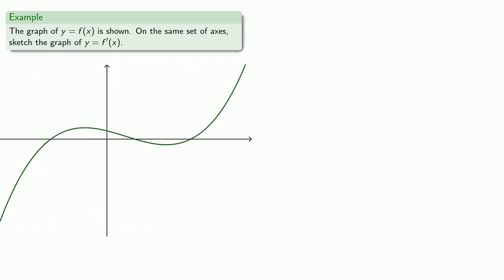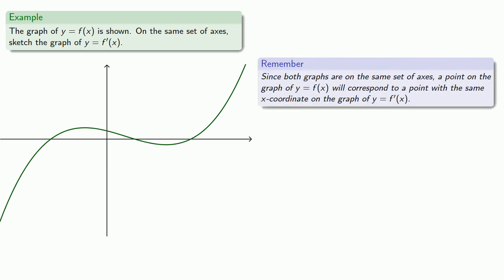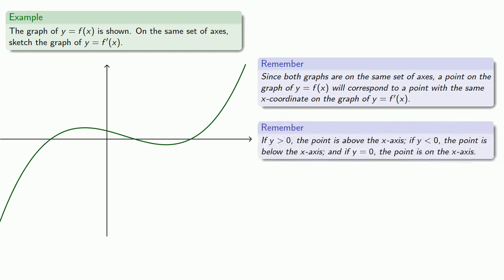Suppose we have the graph of a function. Let's try and draw, on the same set of axes, the graph of the derivative. Now it's important to understand what this means. Since both graphs are on the same set of axes, a point on the graph of y equals f of x will correspond to a point with the same x-coordinate on the graph of y equals f prime of x. Remember: if y is greater than 0 the point is above the x-axis, if y is less than 0 the point is below the x-axis, and if y equals 0 the point is on the x-axis.